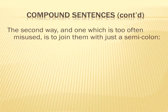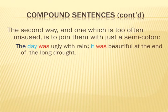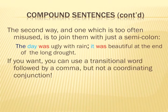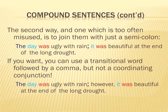There is a second way to join independent clauses — one which is too often misused — and that is to join them with just a semicolon. For example: 'The day was ugly with rain; it was beautiful at the end of the long drought.' No coordinating conjunction, just two independent clauses joined by the semicolon. You can also use a transitional word followed by a comma after the semicolon: 'The day was ugly with rain; however, it was beautiful at the end of the long drought.' Each has a slightly different feel, but both are correct.